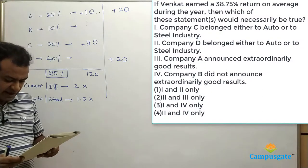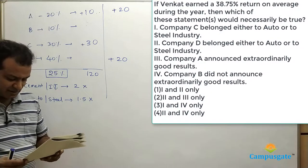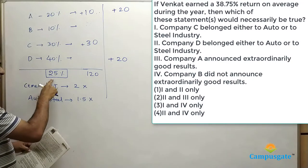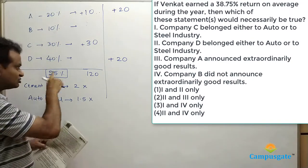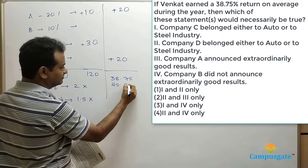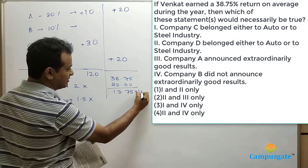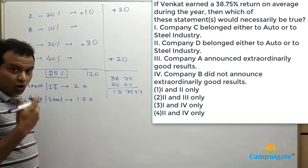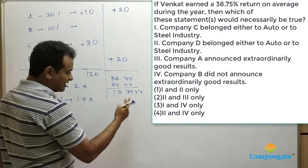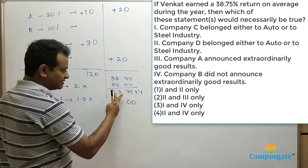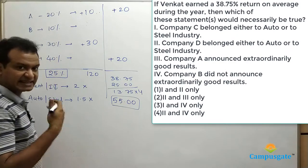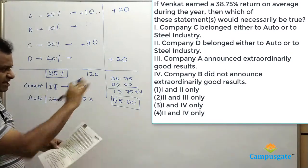Next question: If Venkat earned 38.75% return on average, which statements would necessarily be true? The minimum without extraordinary results is 25%. So 38.75 minus 25 = 13.75, multiplied by 4 equals 55%. He needs to get 55% total extra return by using the two extraordinary good result companies.